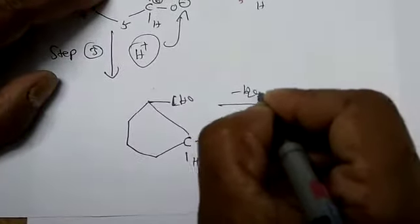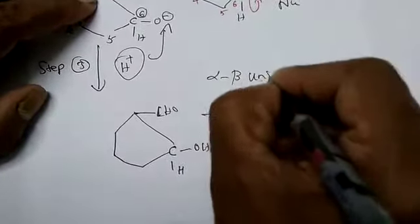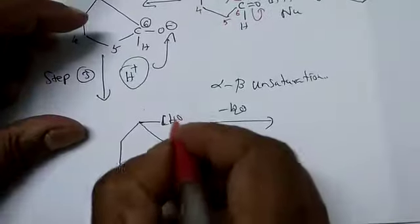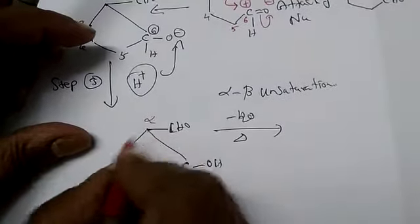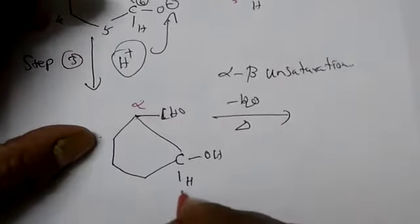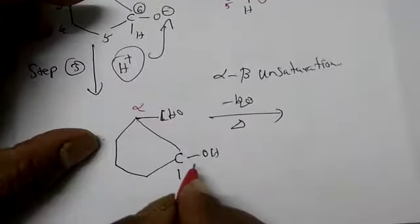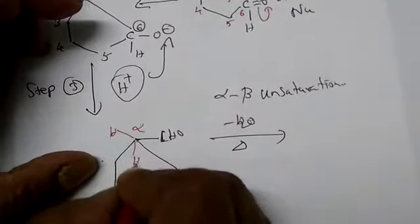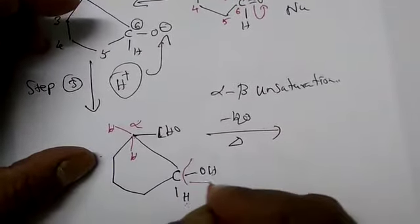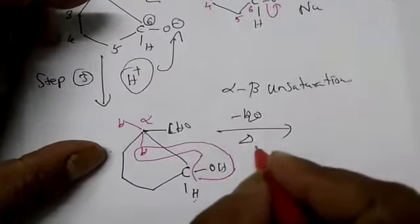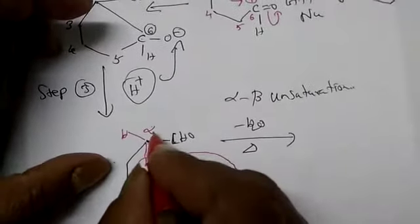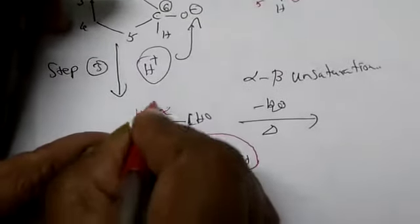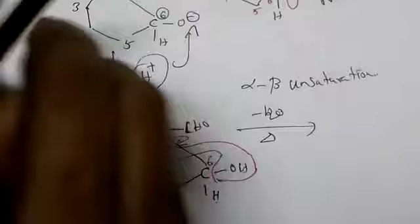The next step is on heating, minus water. We want alpha-beta unsaturation. This is important. Now let's see the alpha-beta positions. This is the functional group, so this is your alpha position. Here one beta, another beta is here. So we want alpha-beta unsaturation. This alpha hydrogen with this OH will be removed as water. Now removal of water - the OH of aldol with this alpha hydrogen. What happens to the bond? It's now shifting and connecting carbon number 2 with carbon number 6.